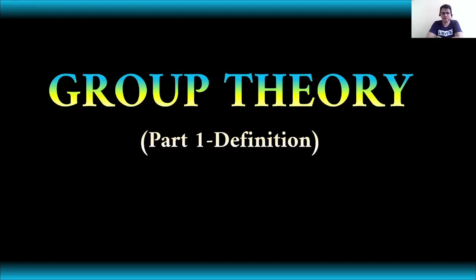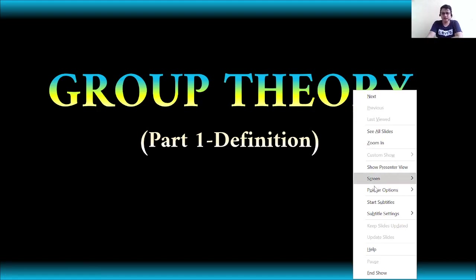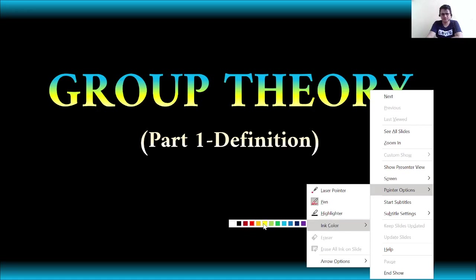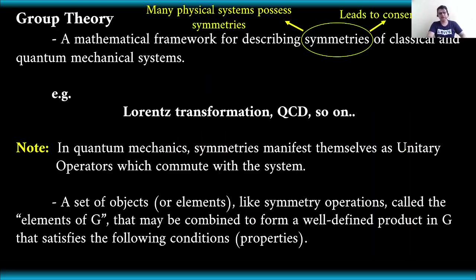When we talk about group theory, it is actually a mathematical framework for describing symmetries of classical and quantum mechanical systems. Many physical systems possess symmetries — for example, we have the Lorentz transformation, quantum chromodynamics, and so on. The good thing about symmetries is that they lead to conservation laws, which makes our problems easier to solve.